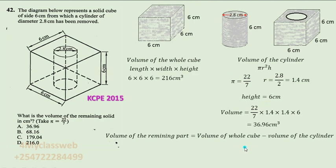So we should be able to get the volume of the part that remained. And therefore, it should be 216 we subtract 36.96, which we should get 176.04 cm cube. And you will find that this answer was choice C.